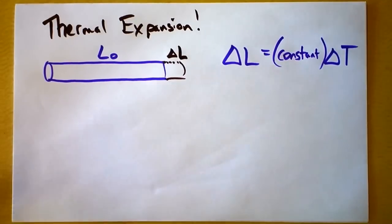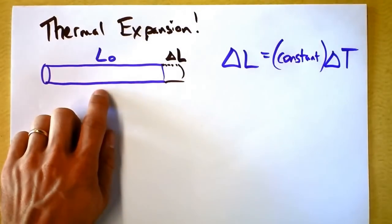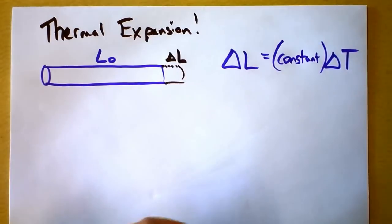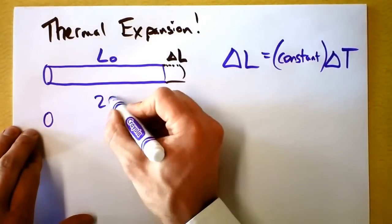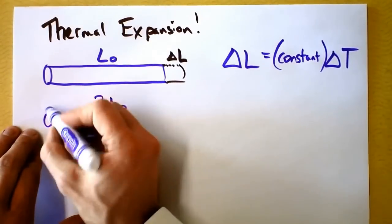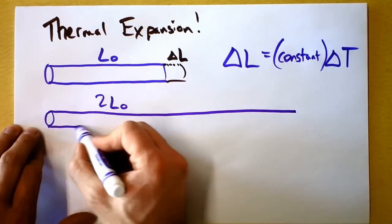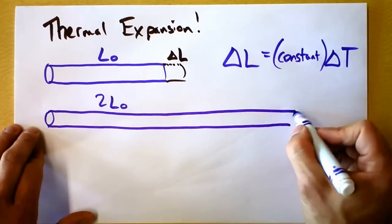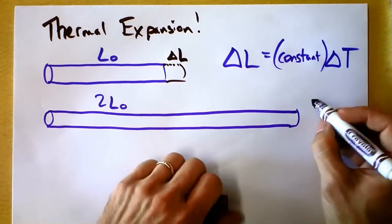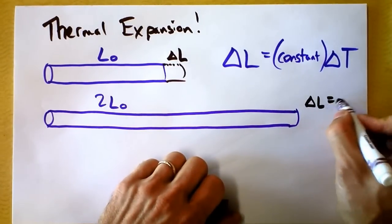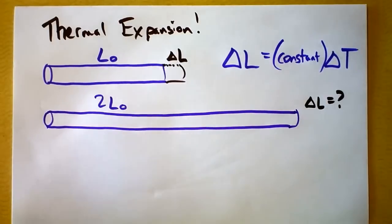But I want to ask you a question. What if I took a chunk of wood that was maybe twice as long as this? What if I had a chunk of wood that was 2·L₀ long and I asked you what I could expect its ΔL to be as I increased its temperature by the same amount? So ΔL equals question mark — what do you think?